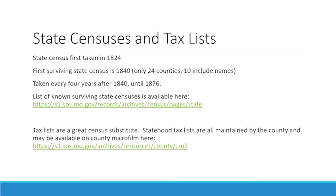Moving on to state censuses and tax lists. State censuses are anything after statehood, which is 1821. The first state census was taken in 1824 but does not survive. The first surviving state census is 1840, and only 24 counties have survived — but only 10 include names. The rest are abstracts providing basic counts. We generally blame the 1837 capital fire for the 1840 being the first surviving state census.